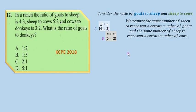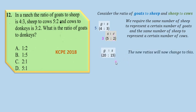In the second ratio, we multiply by 3 to get 15 for the number of sheep and 6 for the number of cows. The new ratio of goats to sheep is now 20:15, and the ratio of sheep to cows is 15:6.